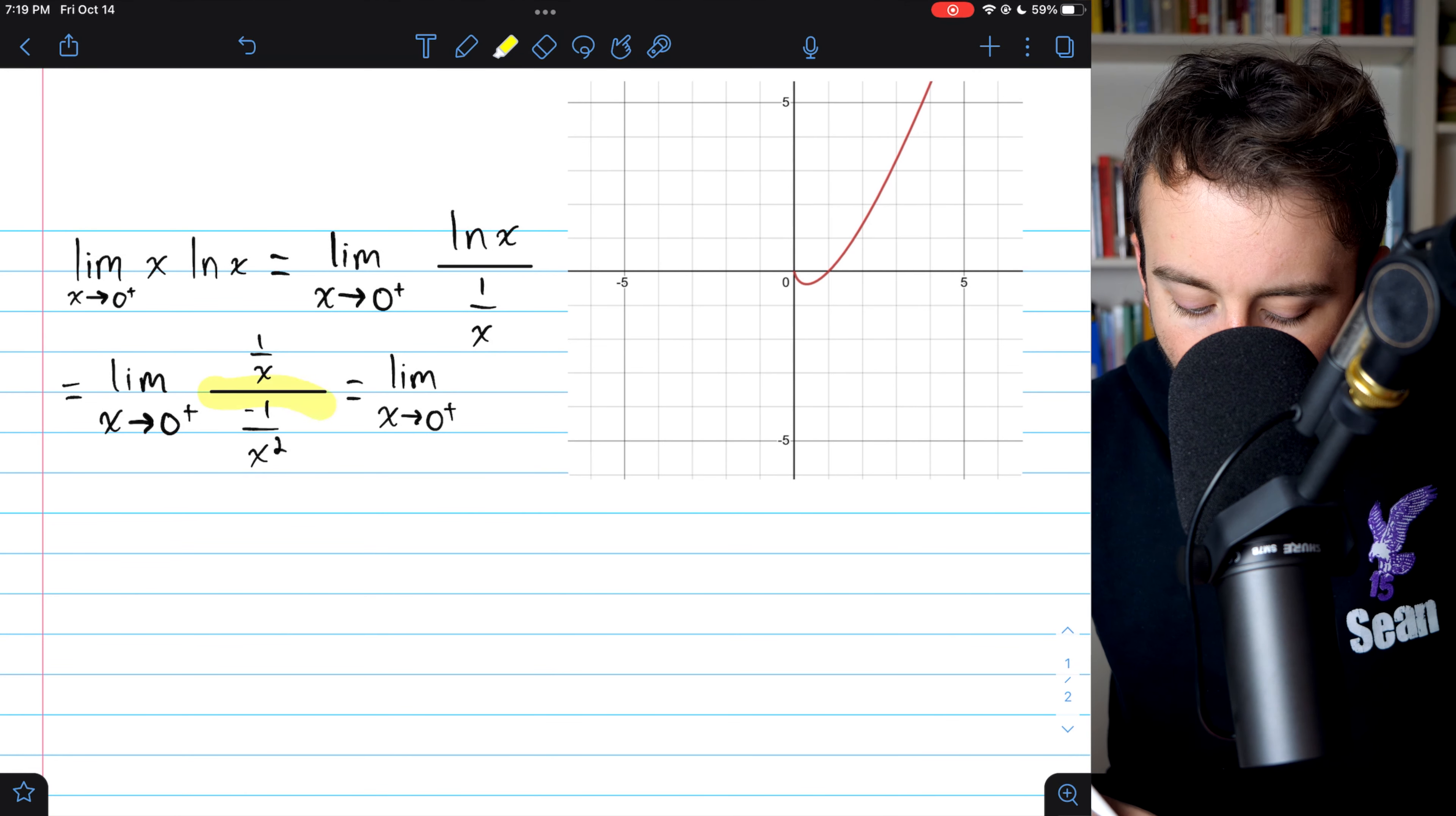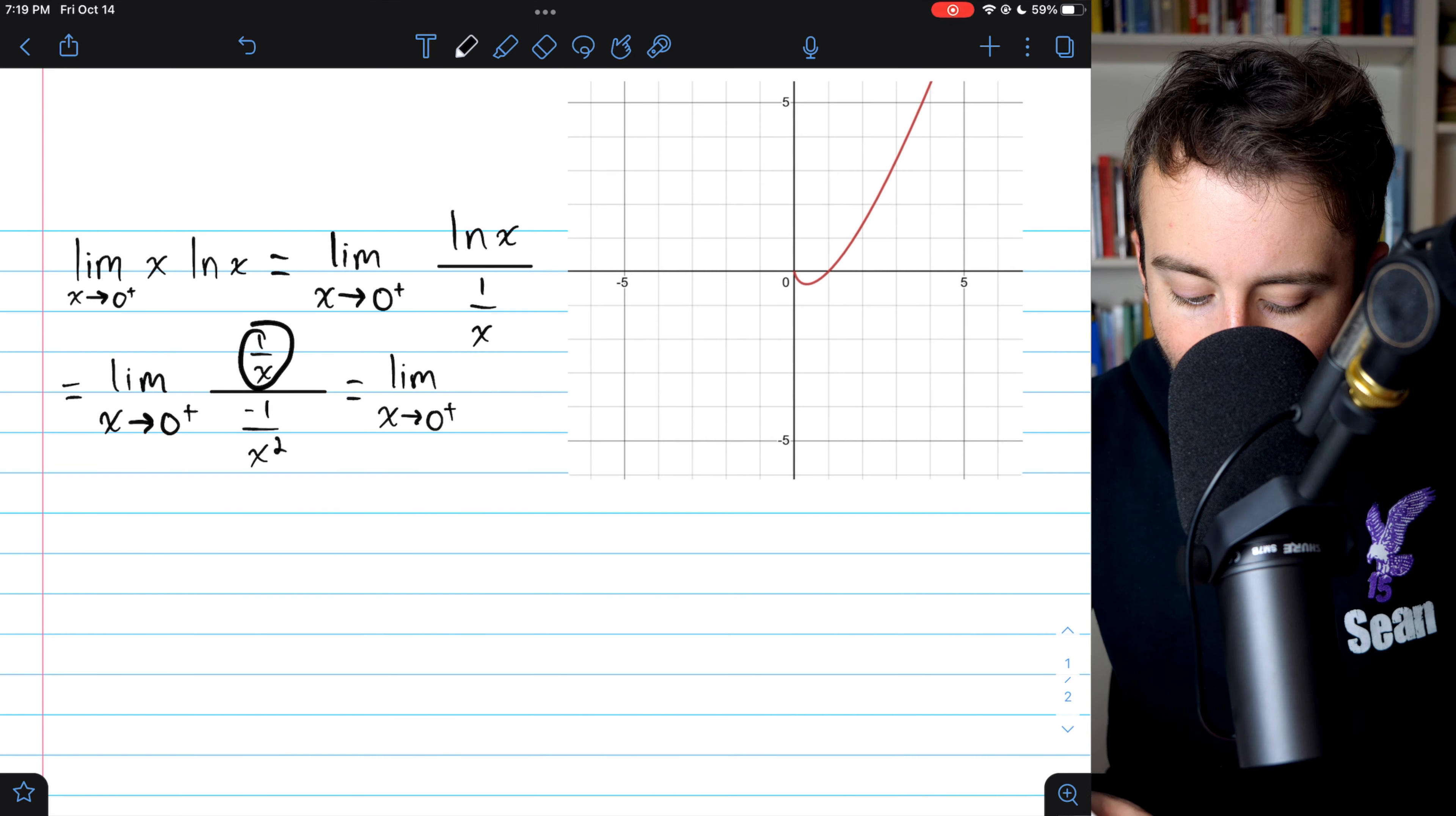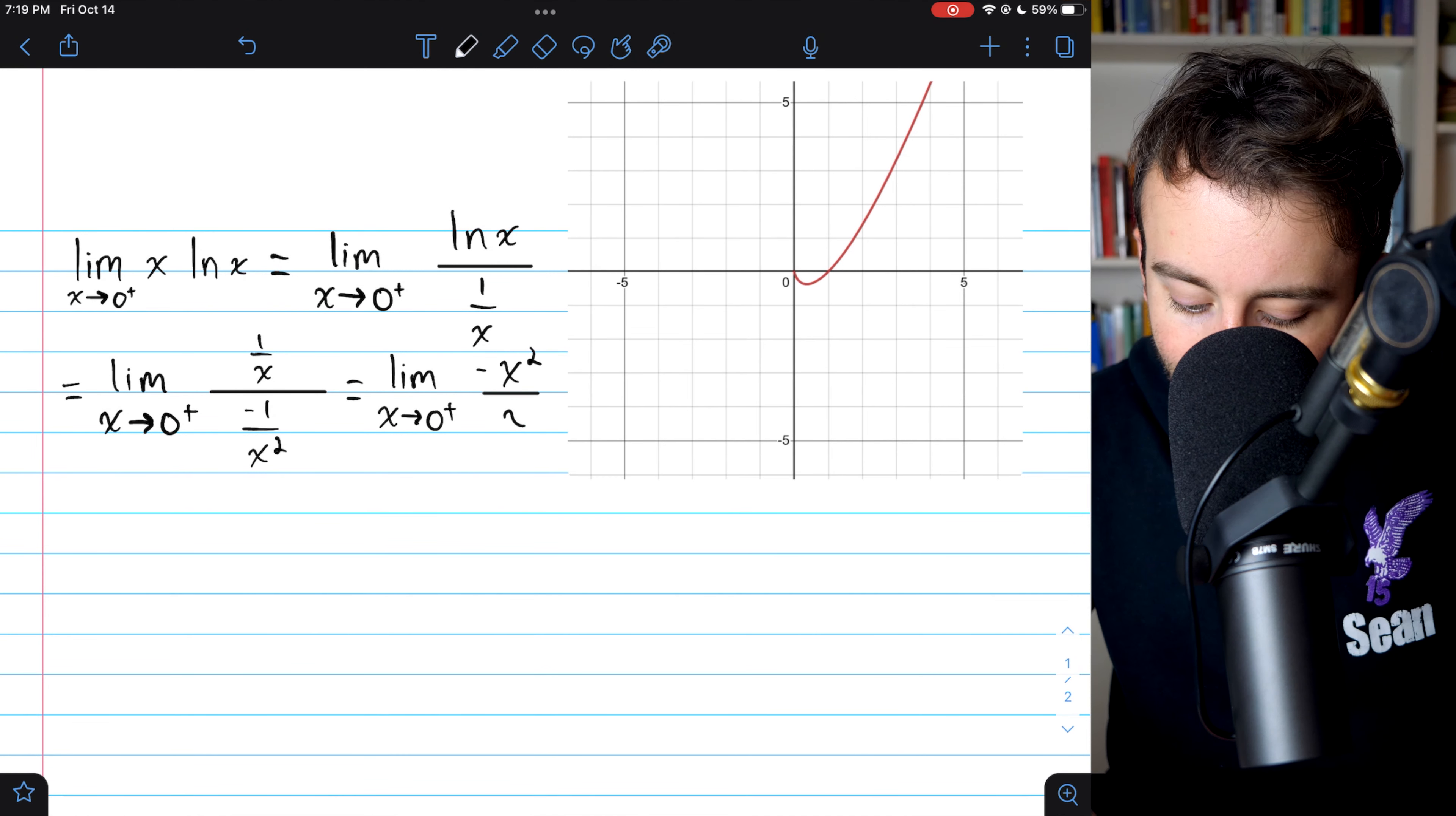And now we can rewrite this and we'll nearly be done. Dividing by this fraction is the same as multiplying by its reciprocal. So what we really have here is one over x times x squared over negative one. That's the same as negative x squared divided by x.